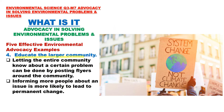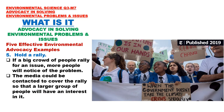4. Educate the larger community: Letting the entire community know about a certain problem can be done by posting flyers around the community. Informing more people about an issue is more likely to lead to permanent change. 5. Hold a rally: If a big crowd of people rally for an issue, more people will notice the problem. The media could be contacted to cover the rally so that a larger group of people will have an interest in it.